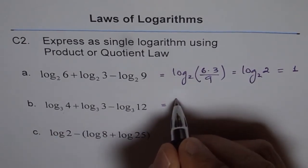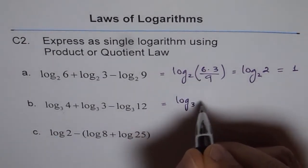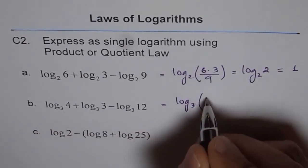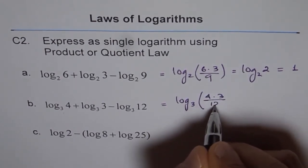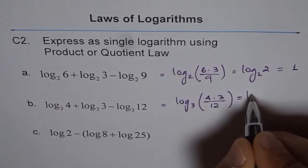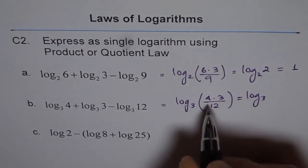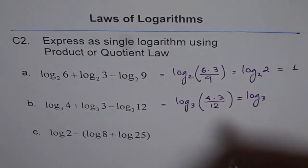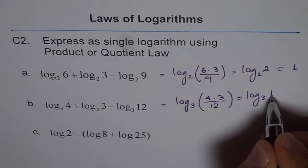So now that gets multiplied. We get log of 3 and we get 4 times 3 divided by 12. Now that is log of 3. 4 times 3 is 12 and 12 divided by 12 is 1, equals to 1.